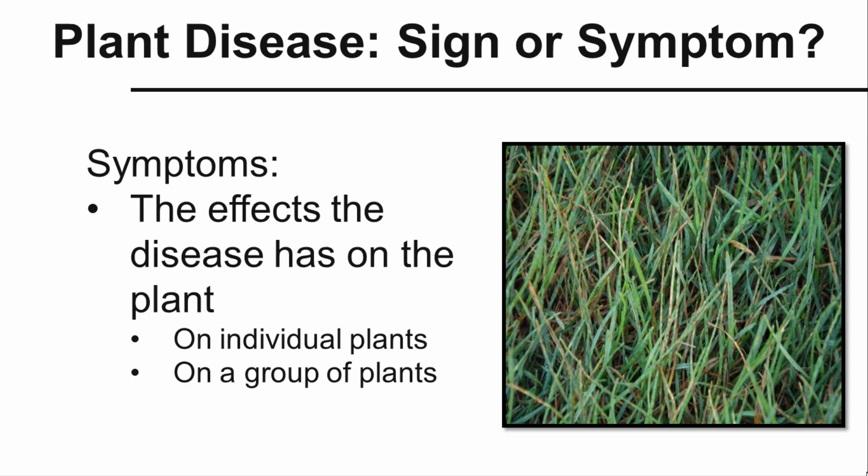Let's start by taking a look at symptoms. Symptoms are the effects the disease has on the plant. Again, in this illustration, we see the lesions. It's not the actual fungus, but it's the symptoms that the disease is expressing on that plant — it's the effect of the disease.